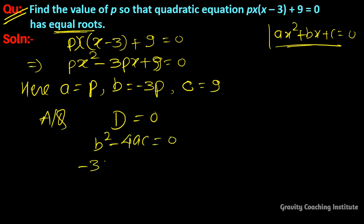So (-3p)² - 4·p·9 = 0, which implies that 9p² - 36p = 0.